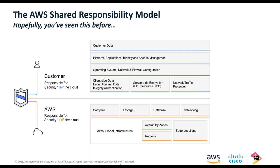We group availability zones together into a geographic region. For a highly available application with synchronous replication, you'd deploy across two or more availability zones within one region — that differs from many other cloud providers. We also have many edge locations for our CDN and a service called Direct Connect, which lets you plug your network backbone into ours so you can access AWS resources over a private network interface without going over the public internet.